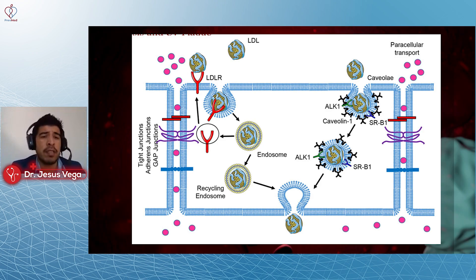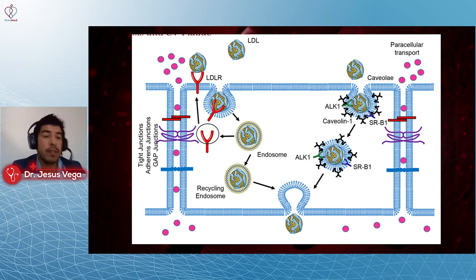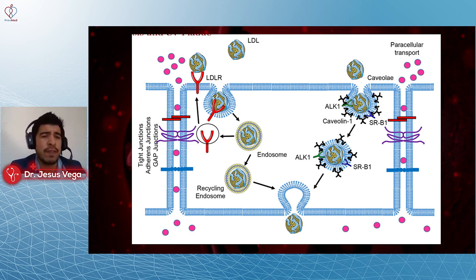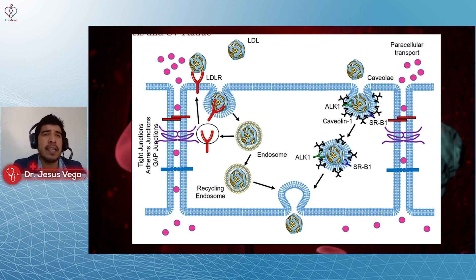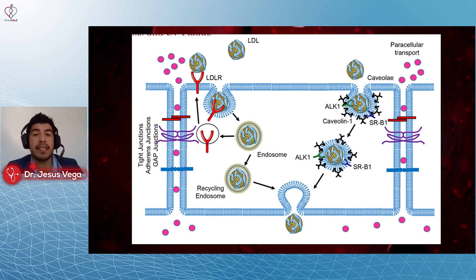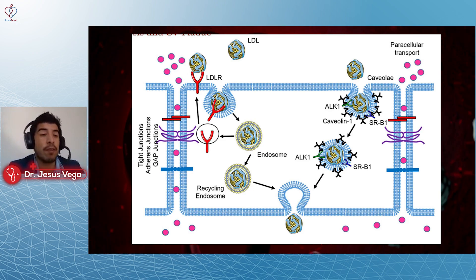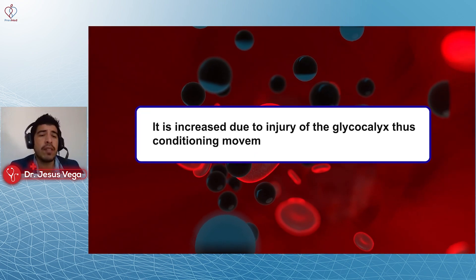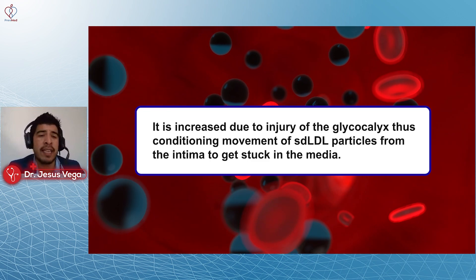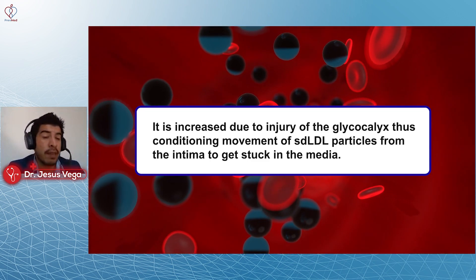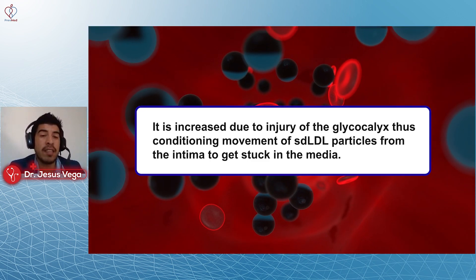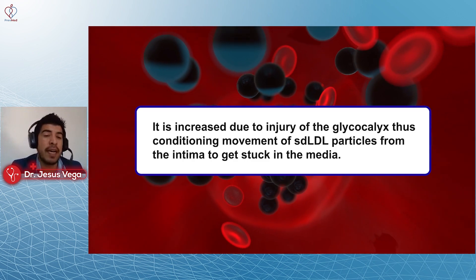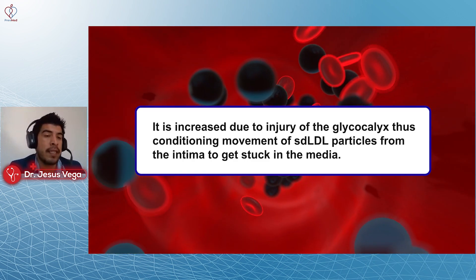We have talked in the past about the glycocalyx, which is basically this metabolic process outside the surface of the cell. There are different products being built claiming they can increase health of the glycocalyx, which gets impaired with hypertension, inflammation, and insulin resistance. When there is an injury of the glycocalyx, that contributes to movement of small dense LDL particles from the intima, and they get stuck in the media layer of the artery.